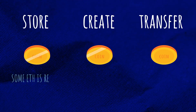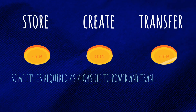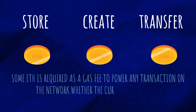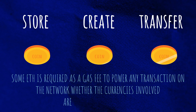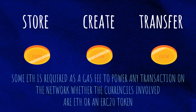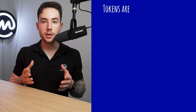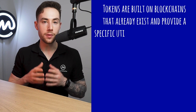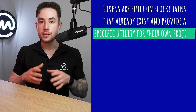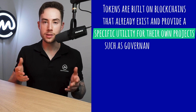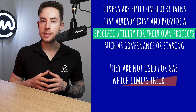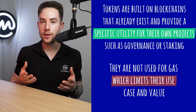For example, some ETH is required as a gas fee to power any transaction on the network, whether the currencies involved are ETH or an ERC-20 token. Tokens, meanwhile, are built on blockchains that already exist and provide a specific utility for their own projects, such as governance or staking. They are not used for gas, which limits their use case and also their value.